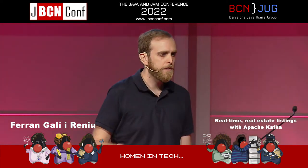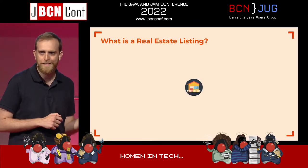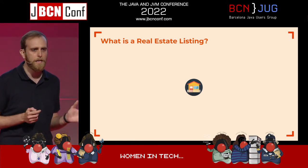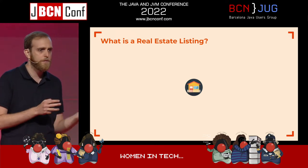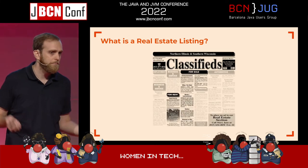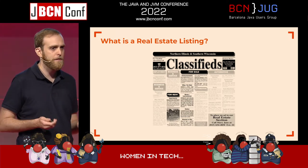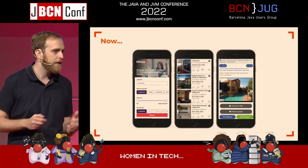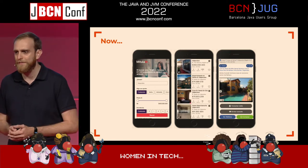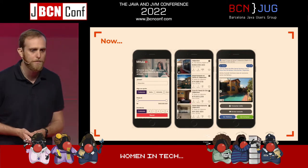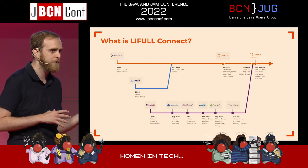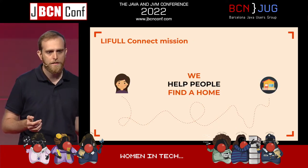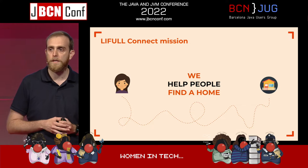I want to give you a bit of context. What is a real estate listing — the title of this talk is 'Real-Time Real Estate Listings with Apache Kafka.' What's a real estate listing? Well, it's a piece of private property that is put either for sale or for rent. A long time ago, you could see that on newspapers, but right now everything is digitalized and you find it straight away on your mobile phone. LifeWall Connect — we are in this business. We are a group of companies that at some point we merged together with a common mission, which is to help people find a home.